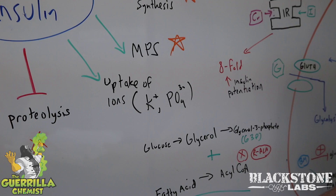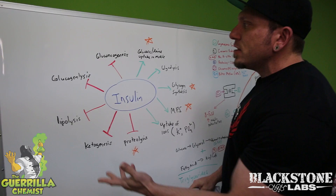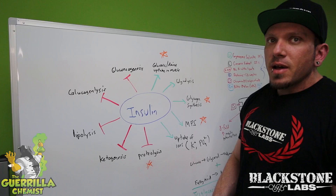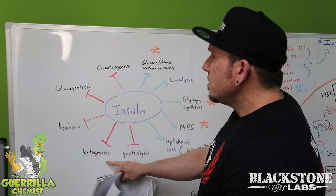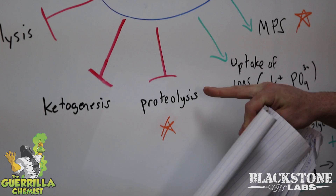Insulin also prevents certain things from happening: gluconeogenesis, which is the formation of glucose from amino acids; glycogenolysis, which is the breakdown of glycogen into individual glucose molecules; lipolysis, which is the breaking down of fat cells; ketogenesis, which is the formation of ketone bodies; and proteolysis, which is the breakdown of proteins.